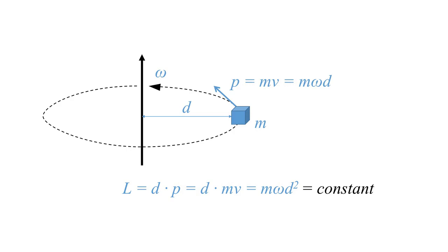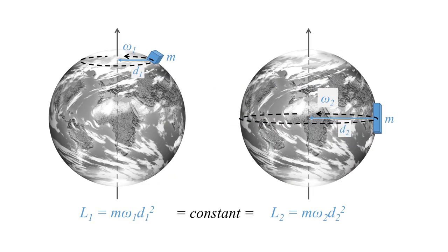So, for example, if d would change as the result of some system-internal event, then the angular velocity omega would need to change as well for the angular momentum to remain constant.